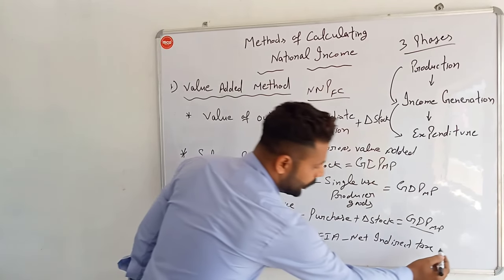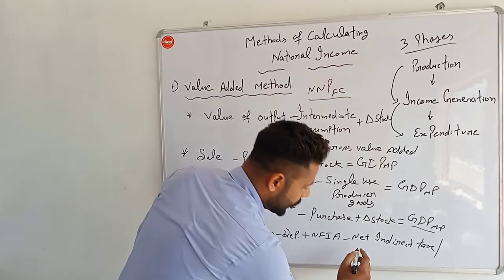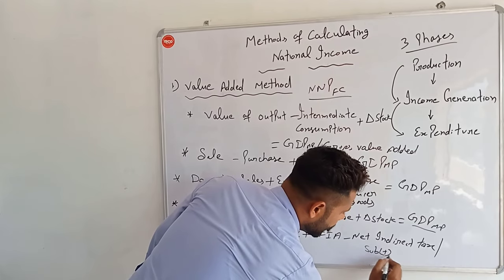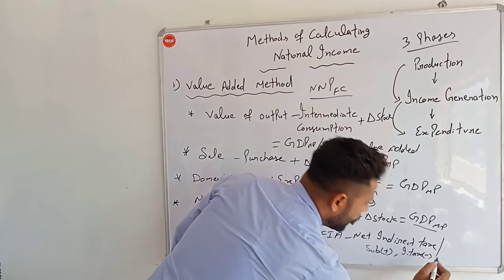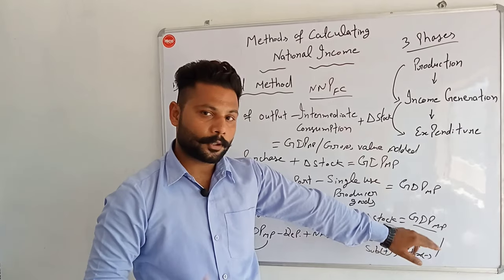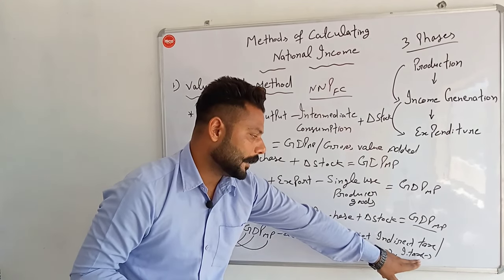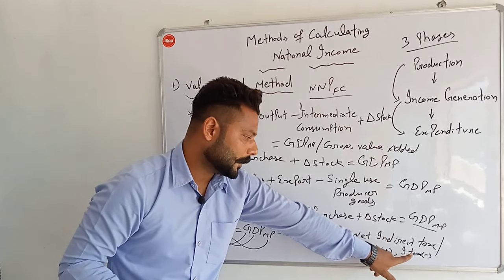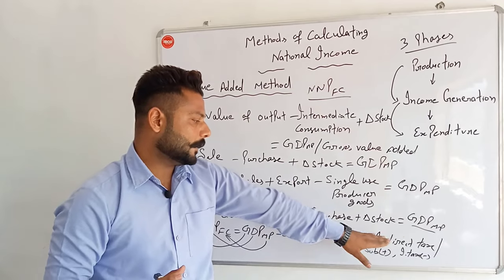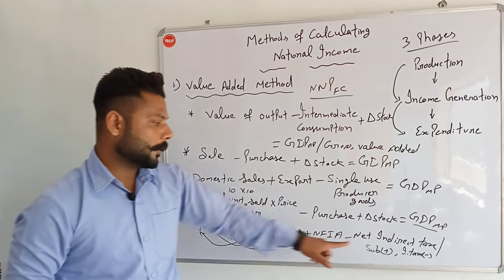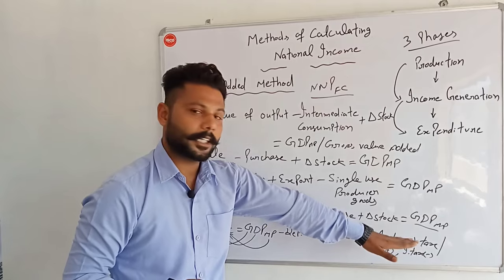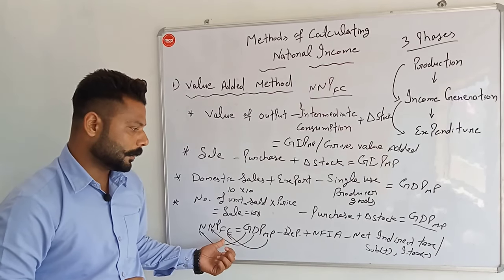We will calculate the market price and apply indirect taxes. There are direct taxes and indirect taxes — we have to account for all indirect taxes and calculate the income net of taxes. We subtract indirect taxes and add subsidies to convert from market price to factor cost, giving us the final national income at factor cost.